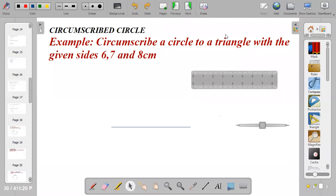Welcome to my channel Auntie D Made Easy. If you are new on this channel, kindly press on the subscribe button. In today's video, I'm going to teach you how to circumscribe a circle to a triangle. The given sides of the triangle are 6, 7, and 8 centimeters.